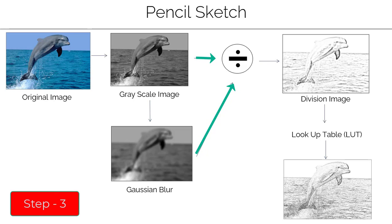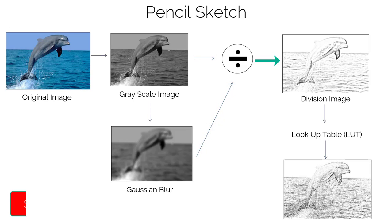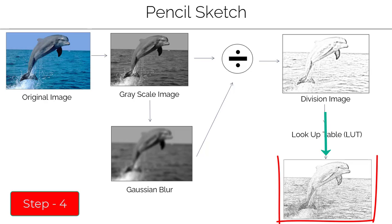Step three: divide the grayscale image with the blurred image to get the division image. And finally, step four is to transform the image using a lookup table. This transformation is also called gamma correction. With that, we will get the pencil sketch image as shown here.